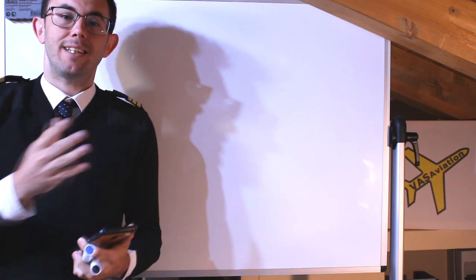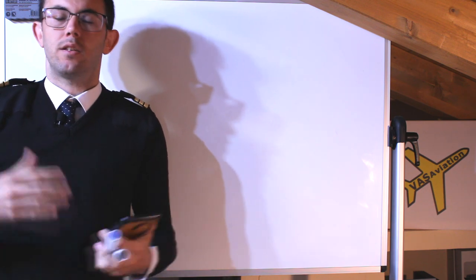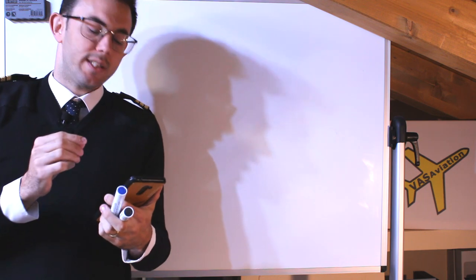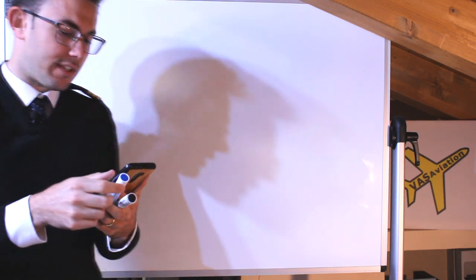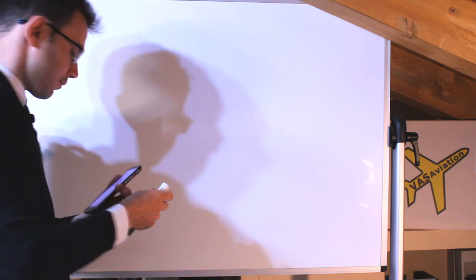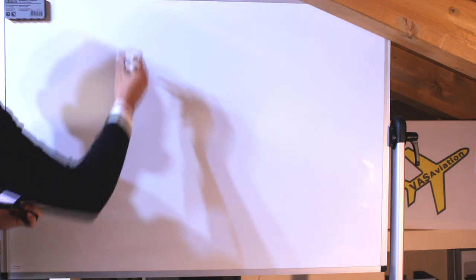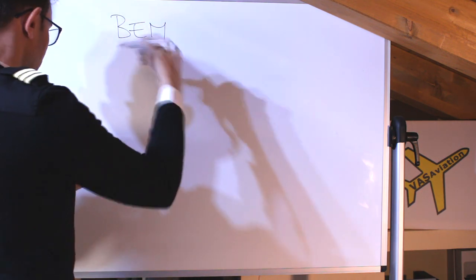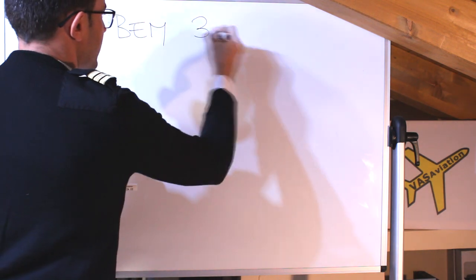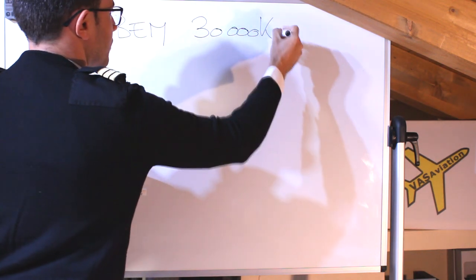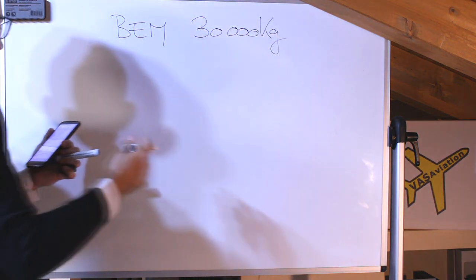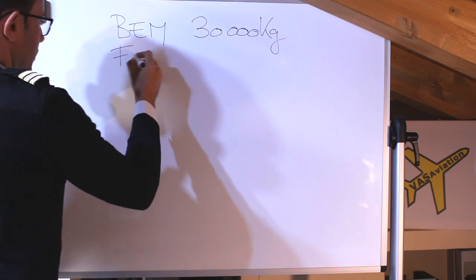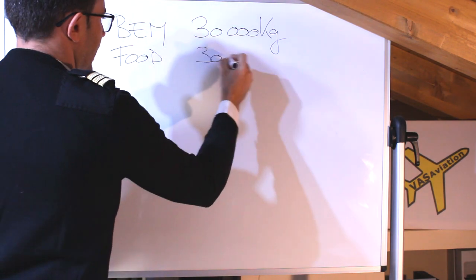Now let's put the diagram into practice with exercises from the question banks. The first question says: the basic empty mass of an aircraft is 30,000 kilos. The catering is 300 kilos.